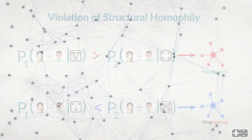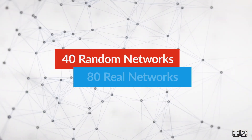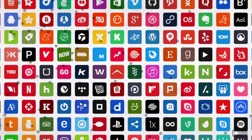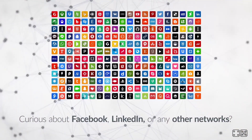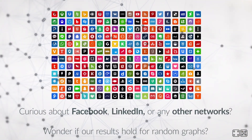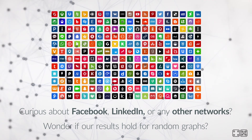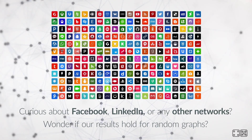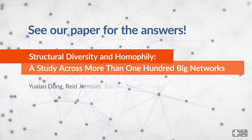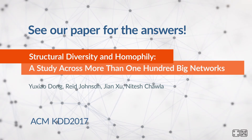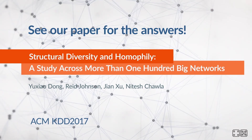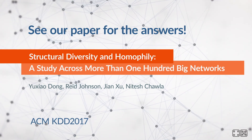Our work catalogs the effects of structural diversity on 120 different networks. Curious about the results for Facebook, LinkedIn, YouTube, or another network? Wondering if our results hold for random graphs? See our paper at KDD 2017 for the answers and more details. Thanks for watching.